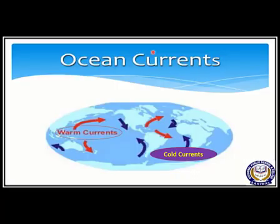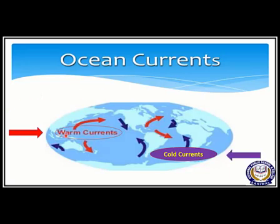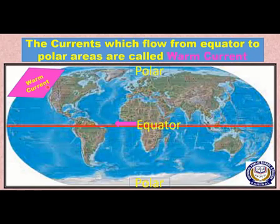There are two types of ocean currents. The first one is a warm current, and the second is cold currents. Now we are going to study about warm currents as well as cold currents. First of all, we are going to discuss warm currents.